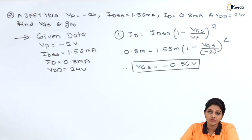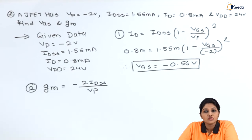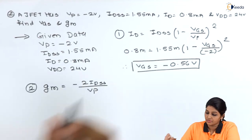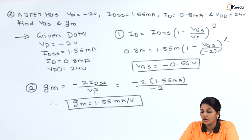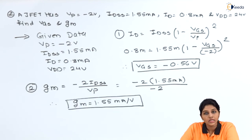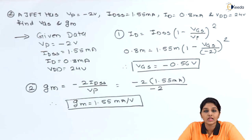Next, we find the value of GM. The formula for GM is: GM = −2·IDSS / VP. Substituting the values, the value of GM is obtained as 1.55 mA/V. This is how we can calculate the value of transconductance for a JFET.